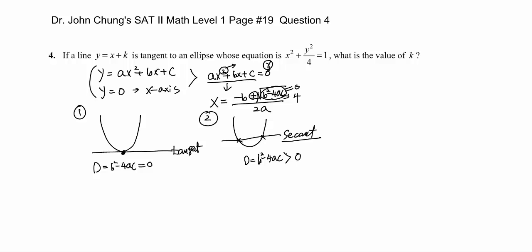When the discriminant is positive, we have two intersections and the line is a secant, not a tangent. The third case: the graphs don't intersect at all. The number inside the radical is negative, giving imaginary roots, so there's no intersection. That means the discriminant d is less than zero.